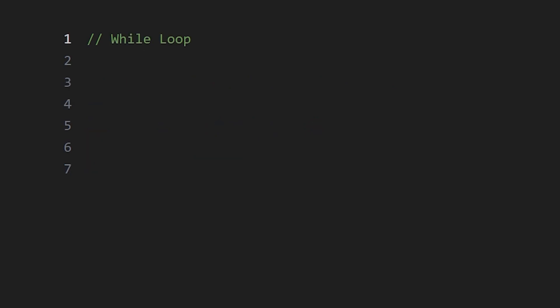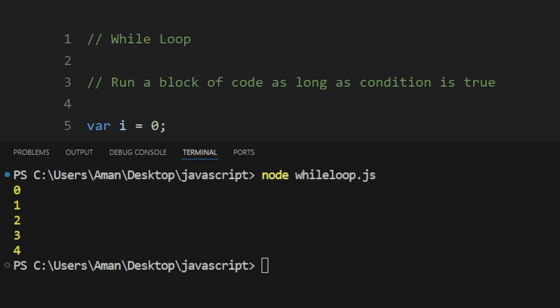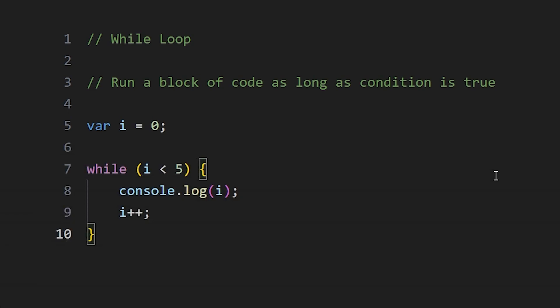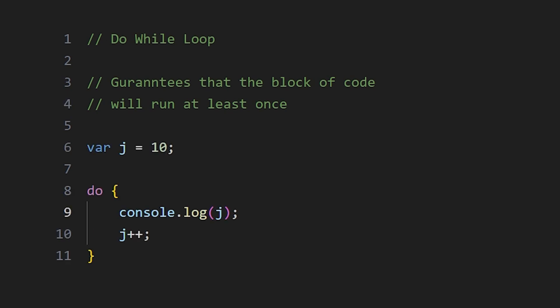Next is the while loop, which runs the given code as long as the condition is true. We write 'while' and the condition in parentheses, for example i < 5, then print i and increment with i++ inside the curly braces — producing 0 to 4. After that, the do-while loop guarantees the code runs at least once. We write 'do' then the code in curly braces, then 'while' with the condition. The code executes first, then the condition is checked.